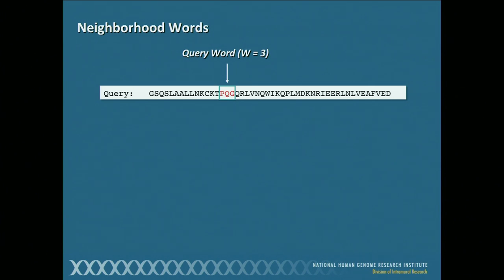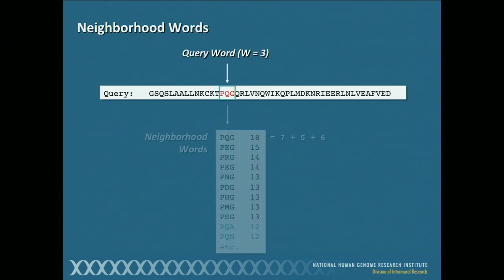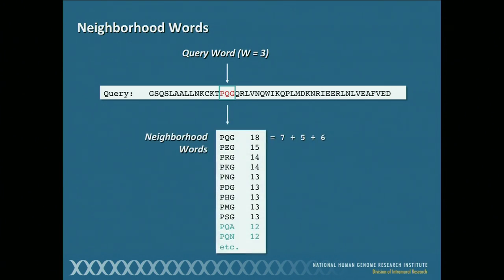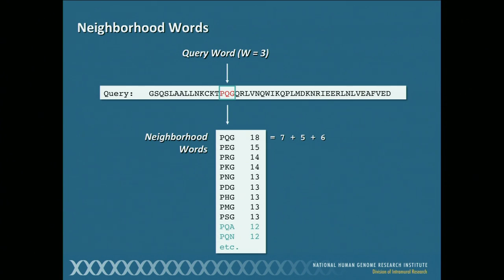We want to now look for the occurrence of that PQG sequence in all of the other proteins in the database that we're searching. But think back to the matrices — we want to find exact matches, but we also want to find places where there are conservative substitutions, because those are also going to be biologically informative. So we're not just looking for PQG, but other things that are close to PQG, using our scores as the metric. We have here the neighborhood — the exact match and a bunch of conservative substitutions — with a score next to each one.